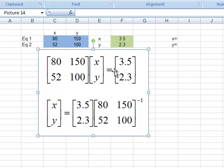So I rearrange the equation so I've got 3.5 and 2.3 on the right hand side. This will be multiplied by the inverse of this matrix.